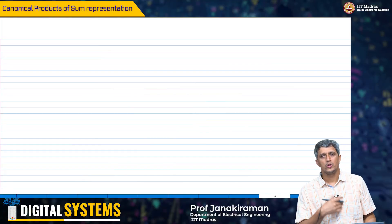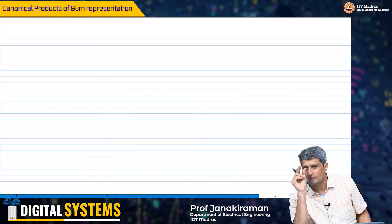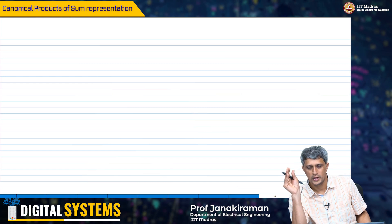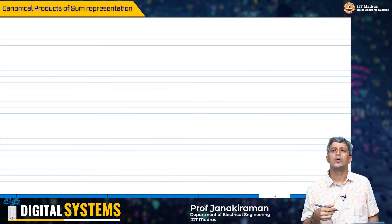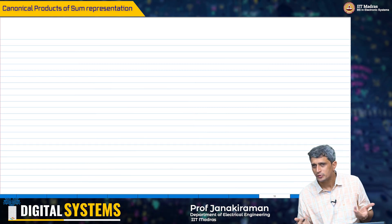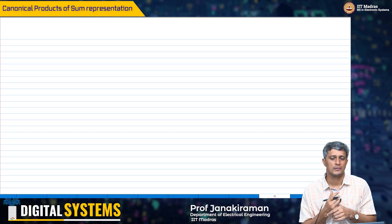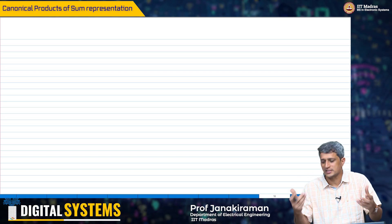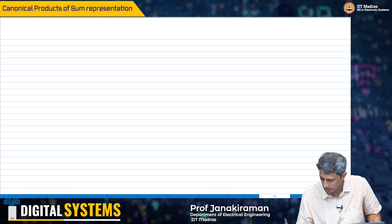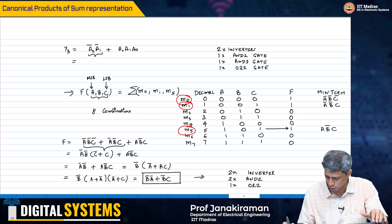We looked at what happens when there are ones in the output of the truth table. Now, is it possible to look at the zeros and actually arrive at a similar expression? So, let us look at that also.